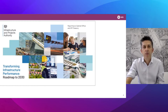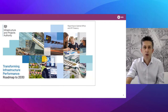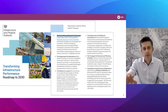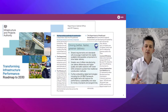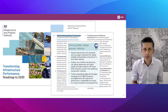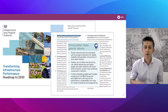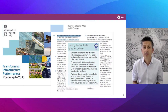Before we start, I want to highlight a couple of major government publications from the last year or two. The first is the Transforming Infrastructure Performance Roadmap to 2030, which has a big section on modern methods of construction. It's a free download — search 'Transforming Infrastructure Performance' on Google. Their definition describes interoperable components to drive faster delivery, increasing efficiencies and higher quality, safer solutions.